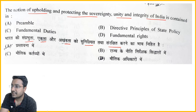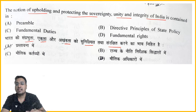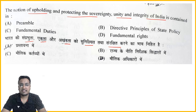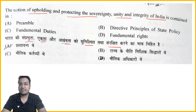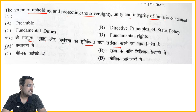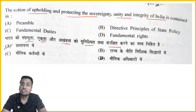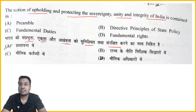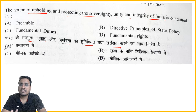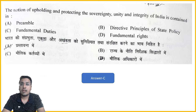If you are doing quality preparation for your exam, your starting areas — Preamble, Fundamental Rights, Directive Principles of State Policy, and Fundamental Duties — should be covered 110%. These papers always contain 4-5 quality questions from Fundamental Rights, Directive Principles, and Preamble. So definitely the answer here will be Option C — Fundamental Duties.